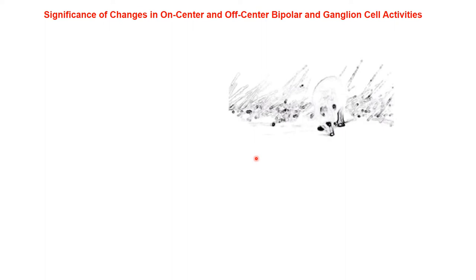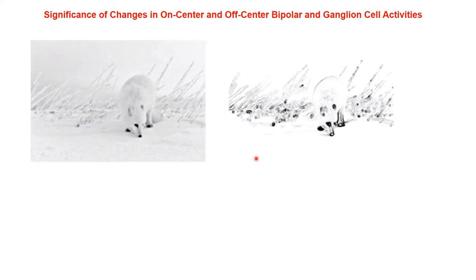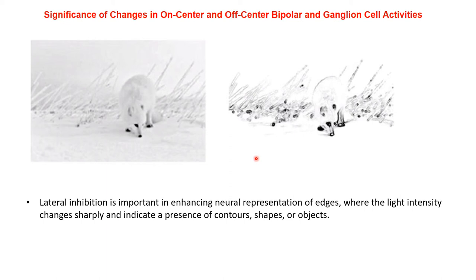Without horizontal cells, the visual image lacks definition. With horizontal cells present, the detection of contours, edges, and outlines of objects is achieved through lateral inhibition. Lateral inhibition is important in enhancing the neural representation of edges where light intensity changes sharply, indicating the presence of contours, shapes, or objects. Lateral inhibition helps detect edges and the contours or shapes of objects.